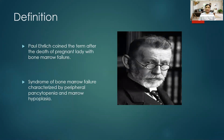Peripheral pancytopenia — as you know — means there is reduction of all three cell lineages. There is reduction in the RBC, there is reduction in the WBC, and there is reduction in the platelet. That is what we call pancytopenia, and when we evaluate the bone marrow we see bone marrow hypoplasia. So this condition is called aplastic anemia.